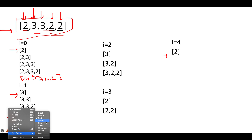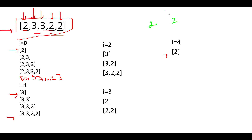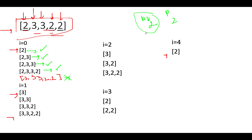Now we need to identify those subarrays where at most two elements are divisible by 2. The value of P is 2 and the value of K is also 2. Walking through the subarrays: [2] is valid with one element divisible by 2. [2,3] and [2,3,3] are happy cases. [2,3,3,2] reaches the upper limit of two elements divisible by 2. But [2,3,3,2,2] has three elements divisible by 2, so we skip it — the question requires at most K=2 elements divisible by P.